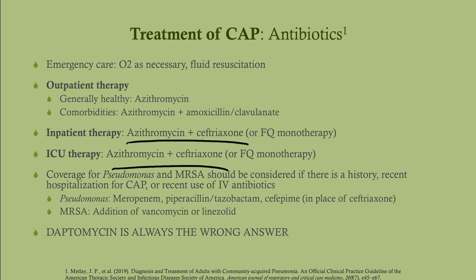For ICU patients, the treatment is the same. If the patient has a history of pseudomonas — especially cystic fibrosis patients — instead of ceftriaxone, use an anti-pseudomonal drug such as meropenem, Pip-Taz, or cefepime. If concerned about MRSA, add vancomycin or linezolid in addition to azithromycin and ceftriaxone, or alongside the anti-pseudomonal drug. Daptomycin is always the wrong answer for pneumonia because surfactant neutralizes it, making it ineffective in the lung.